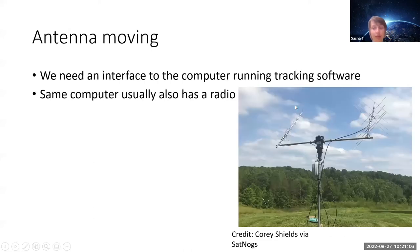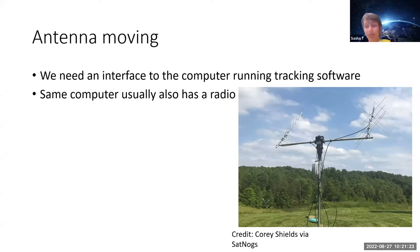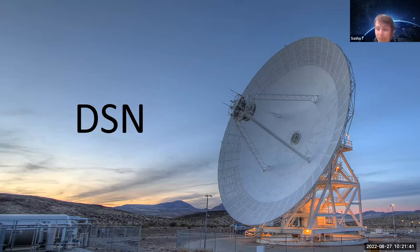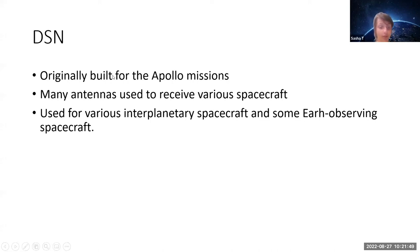For antenna movement, amateurs enjoy using antenna rotors to move antennas, though I still prefer hand-tracking — it's easier than setting up all the required software. These amateur setups are essentially mini versions of the Deep Space Network antennas. The DSN obviously has a slightly larger budget, affording better motors that can move a few tons of antenna. The DSN was originally built for the Apollo missions; they have many antennas to receive various spacecraft, including interplanetary ones, and they are the people who receive the data from James Webb.